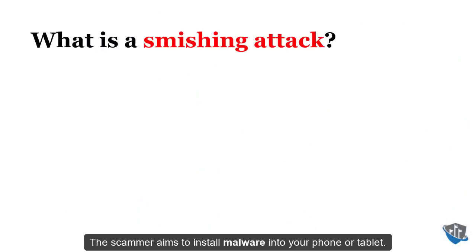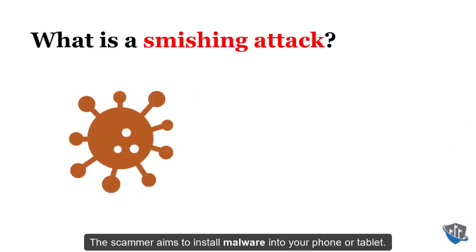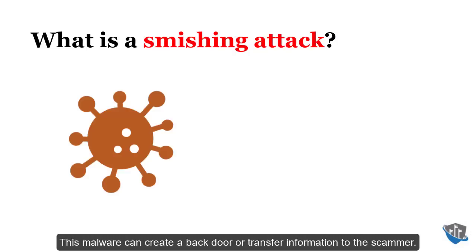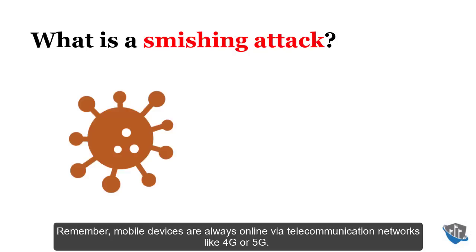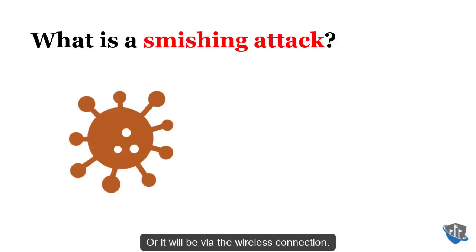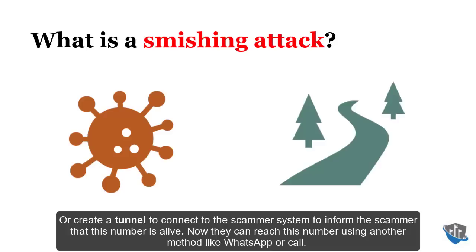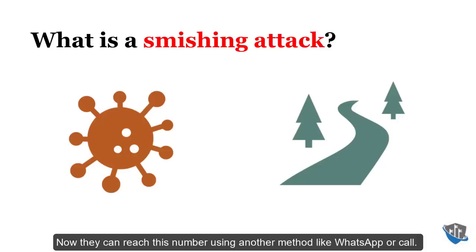The scammer aims to install malware into your phone or tablet. This malware can create a backdoor or transfer information to the scammer. Remember, mobile devices are always online via telecommunication networks like 4G or 5G, or via wireless connection. The malware can also create a tunnel to connect to the scammer's system to inform them that this number is active, allowing them to reach you via WhatsApp or call.